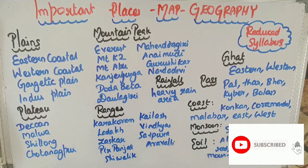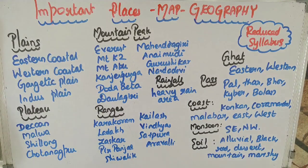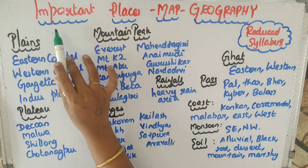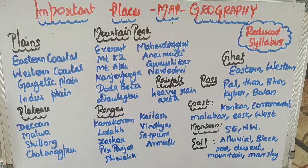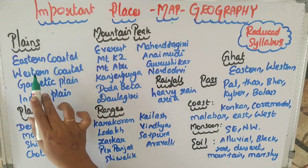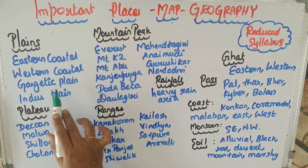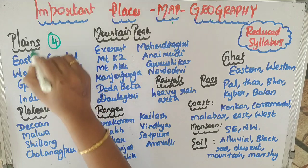Hi everyone, we are going to look at the maps of important places in the area. We are going to look at the maps of the Reduced Portions. There are 4 Plains: Eastern, Western, Gangetic, and Indus Plains.